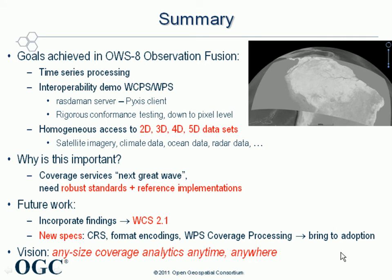These scenarios exemplify the results achieved in OWS 8: versatile time series processing of imagery, interoperability between a RASDAMAN server and a Pixies client, and a coverage conformance testing suite that exercises systems under test down to pixel level. Homogeneous, fast access to 2D, 3D, 4D, and 5D datasets from sources like satellite imagery, climate and ocean data, and radar data is now achievable — all of high importance as coverage services represent the next great wave in geoservice technology.